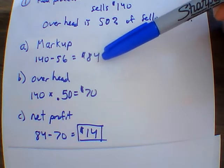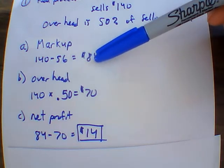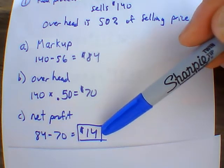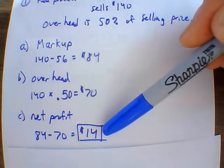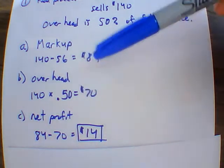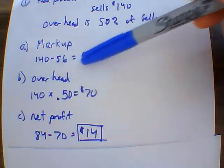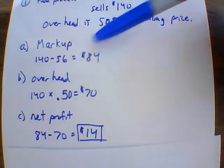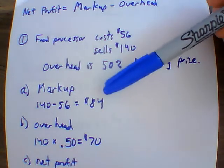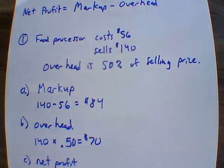This is where many businesses run into problems — they see a good markup and think they're doing well, but they forget how much of that markup gets eaten by overhead. Fourteen dollars is not a lot of profit, so businesses need either higher sales volume or a higher markup. But you can't just raise the price infinitely — if a food processor sells for five hundred dollars, nobody will buy it.